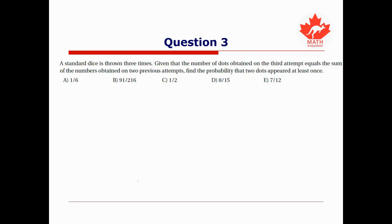For question three, we're told a standard die is thrown three times. Given that the number of dots obtained on the third attempt equals the sum of the numbers obtained on the two previous attempts, find the probability that the two dots appeared at least once. Again, I'm going to try and determine what the total number of possibilities are first. So I'm going to let X denote the value of the die that gets rolled first. Y is going to be the value of the second roll of the die. And we want to look at the cases when the sum of the first and second toss equals the third toss, which I will call Z. Now, since these are all numbers on a die, we know that X, Y, and Z are only numbers between one and six.